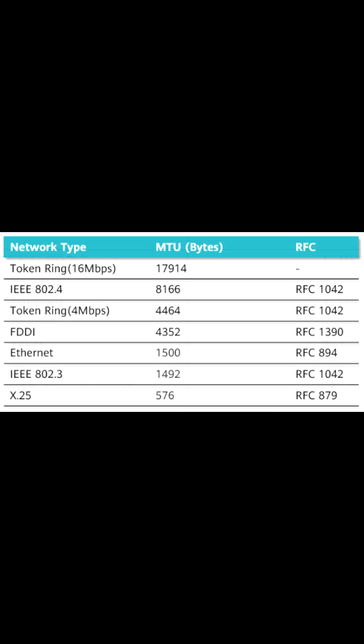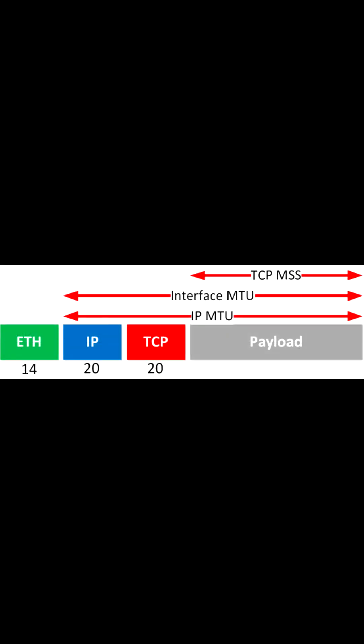The default Layer 2 MTU size on a Cisco switch is 1500 bytes, which is the maximum Ethernet frame size. However, some network technologies such as MPLS require a much larger MTU size to accommodate the additional overhead of the MPLS header.